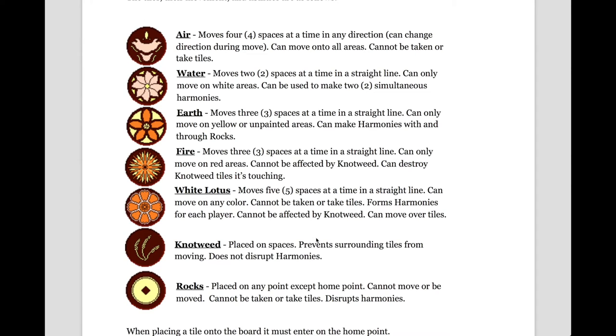The white lotus moves five spaces at a time in a straight line. It can move on any color. It cannot take or be taken by tiles. It forms harmonies for each player, so both you and your opponent can use either person's white lotus to create a harmony. It is not affected by knotweed, and it can move over tiles.